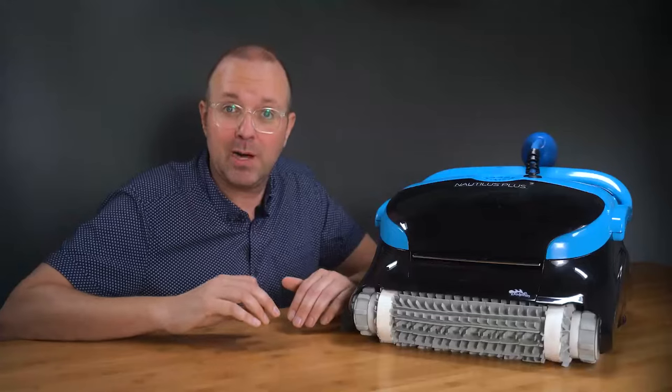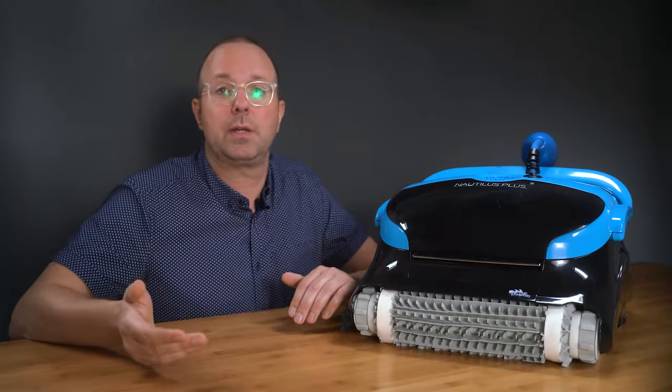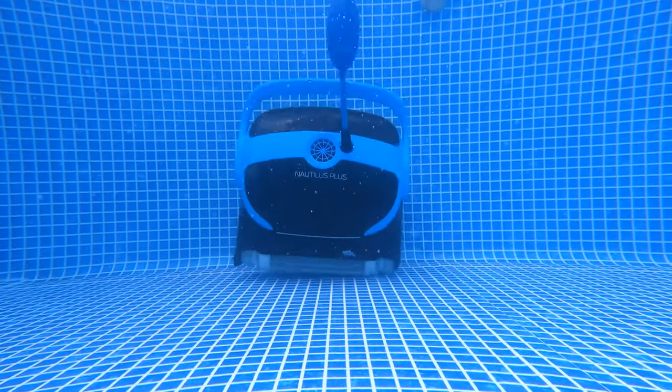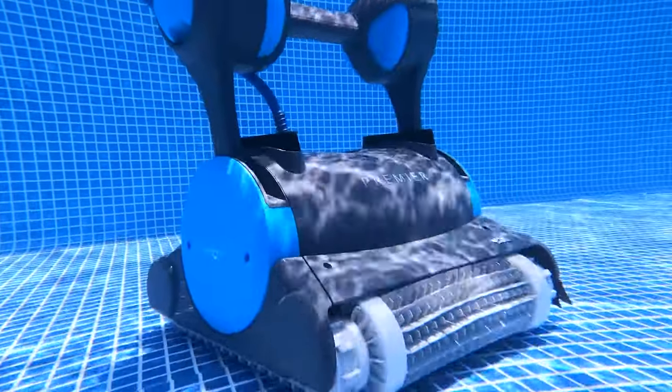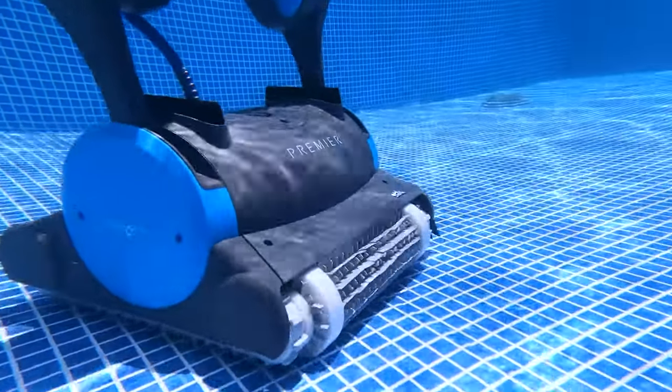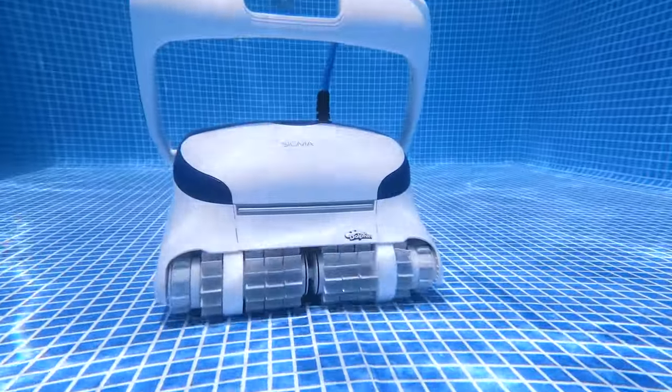Another big thing I care about with robotic pool cleaners is the warranty. You can tell a lot about how long a unit will last with what kind of warranty it has. The CC Plus has a two-and-a-half-year warranty. It's pretty good for a unit like this, but it's not as appealing as a three-year warranty like you'd find on the Dolphin Premier or Dolphin Sigma.